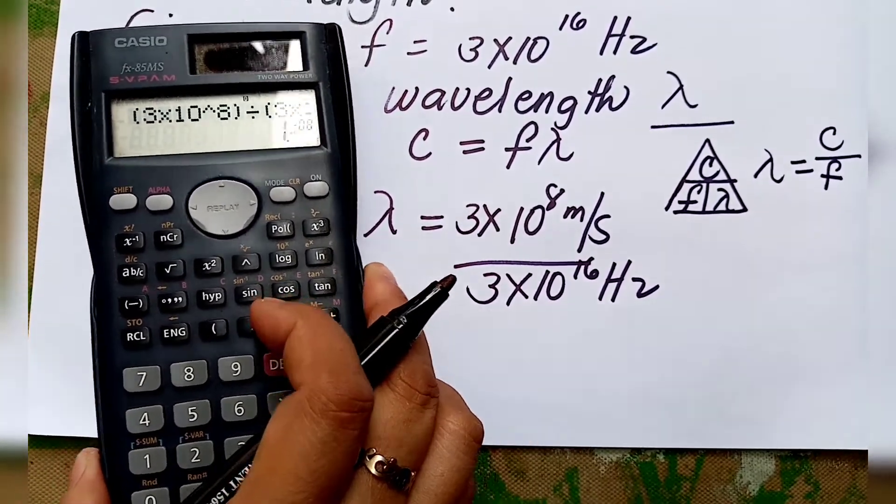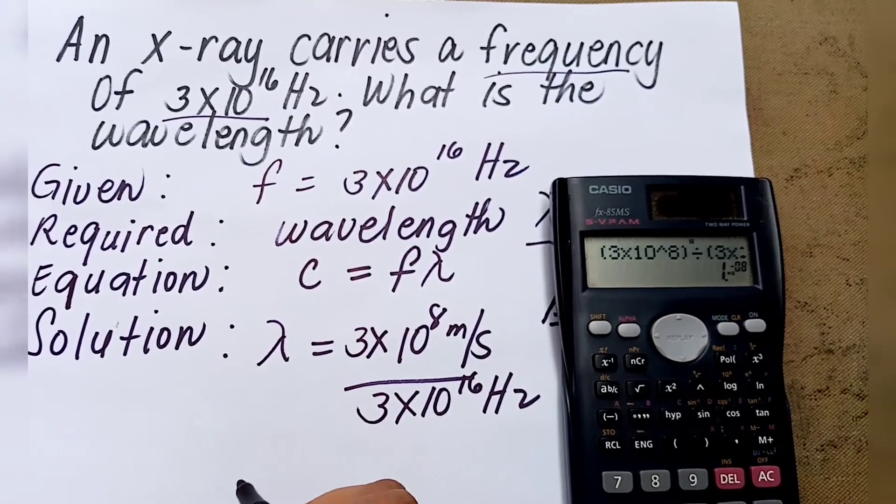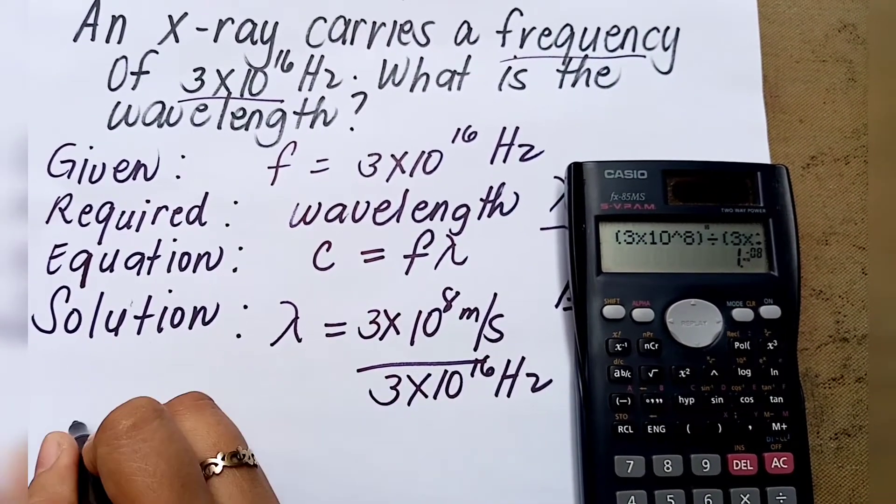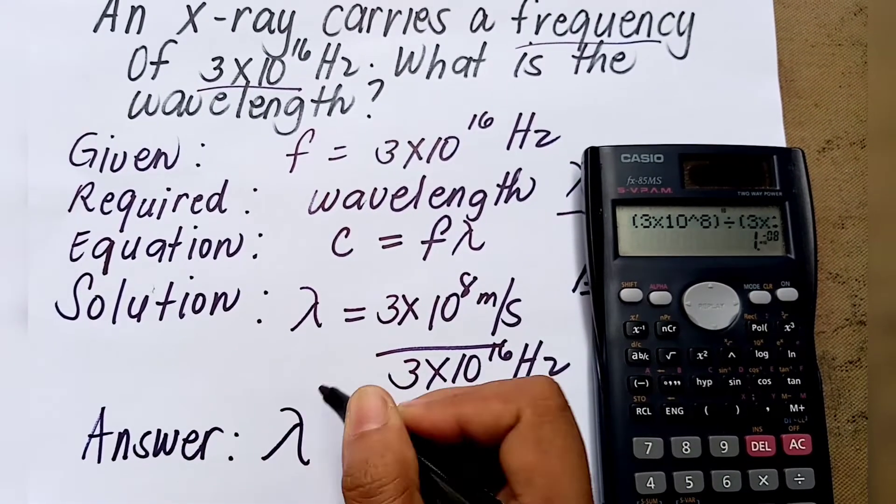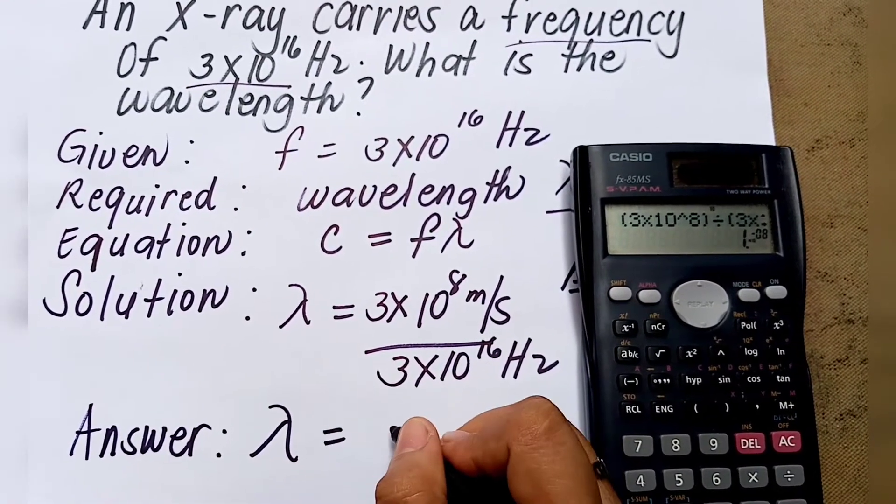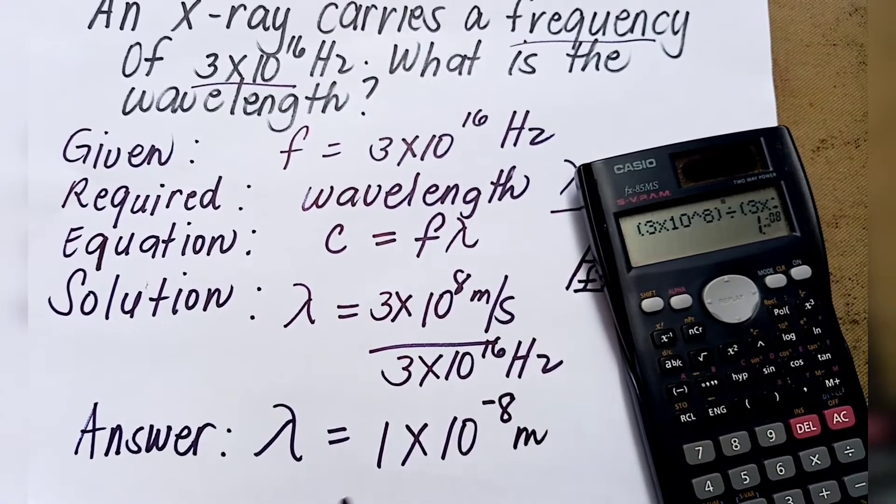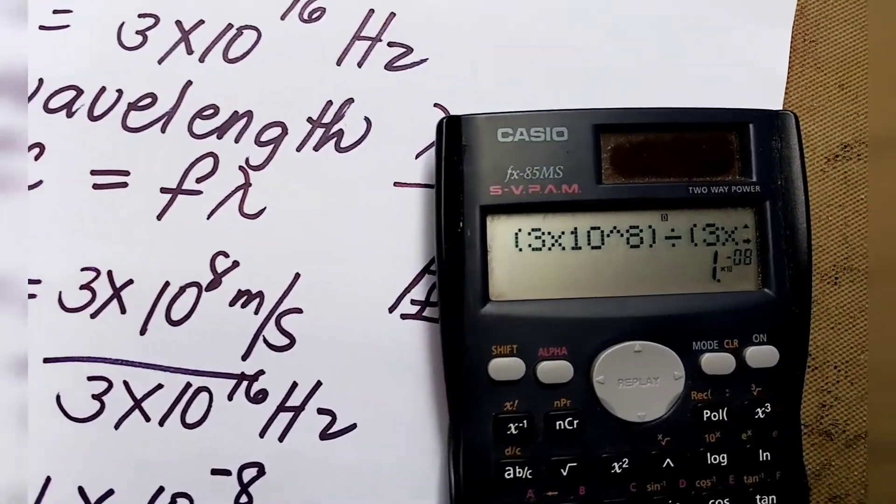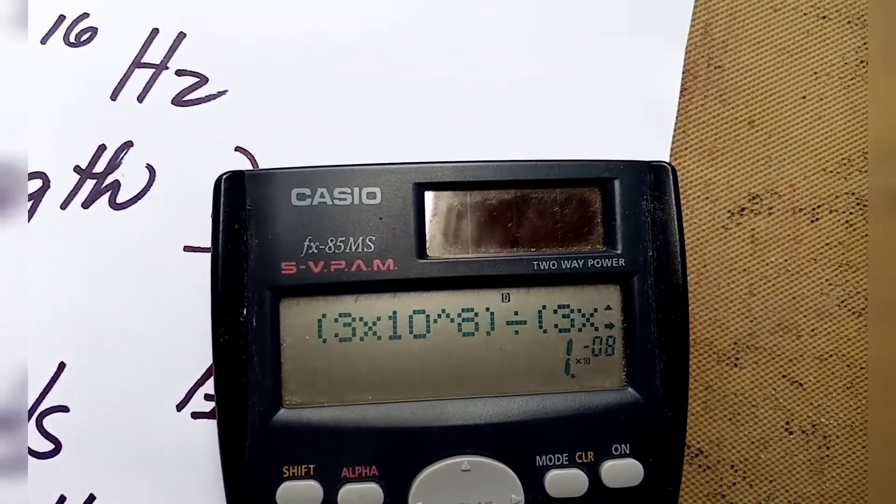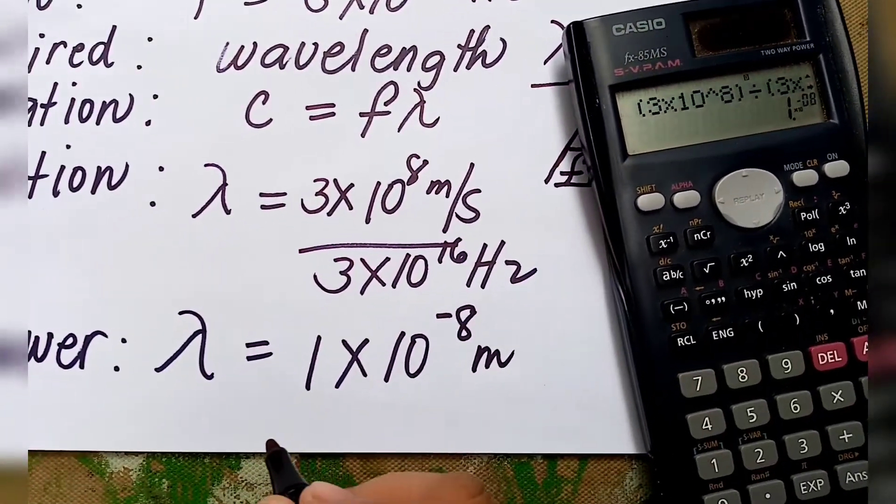We get 1 times 10 to the negative 8. So our answer, wavelength is equal to 1 times 10 to the negative 8 meters. This is the wavelength of an X-ray that carries a frequency of 3 times 10 to the 16 Hertz.